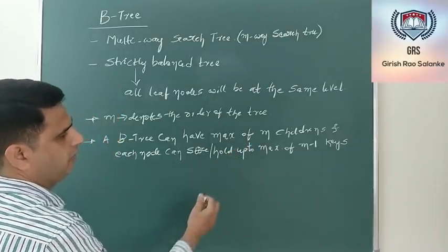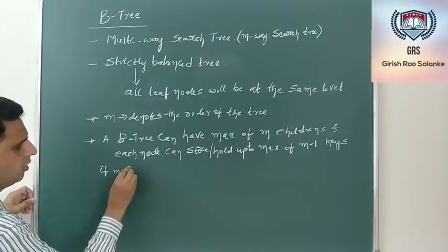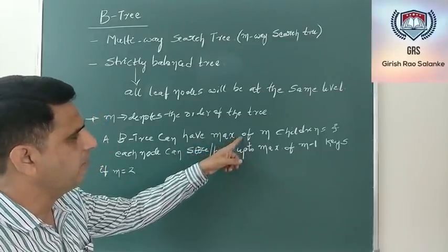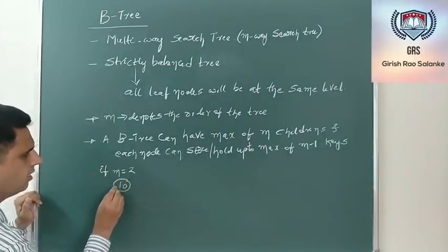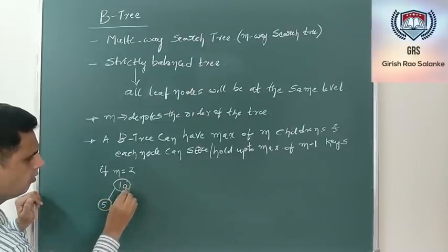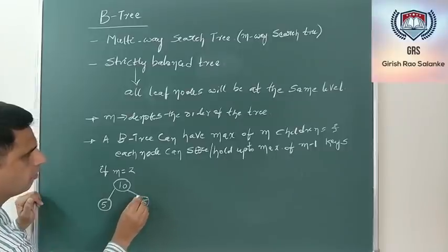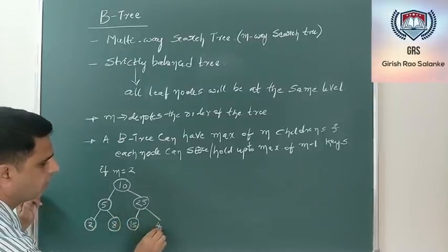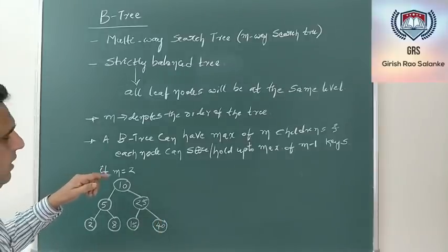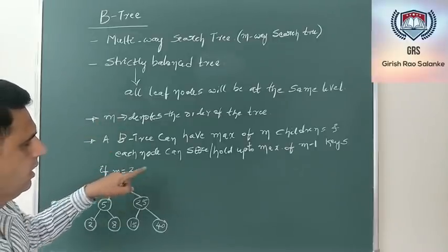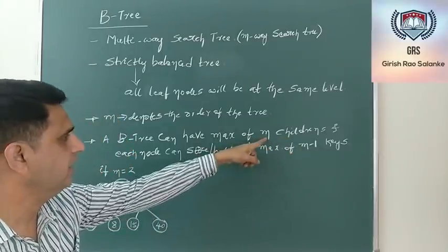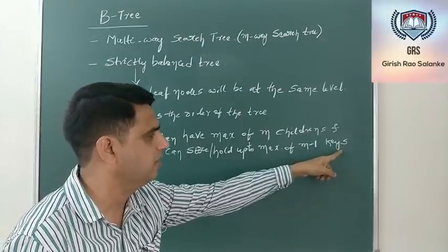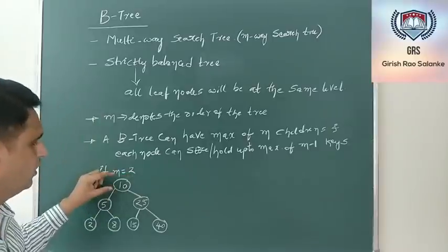For example, if M is 2 it is nothing but a binary search tree — it can have max 2 children and each node stores max 1 key (M minus 1 = 1). So a structure like 10 as root with 5 and 25 as children, and 2, 8, 15, 40 as leaf nodes is a valid B-tree of order 2.